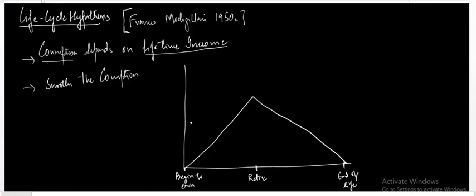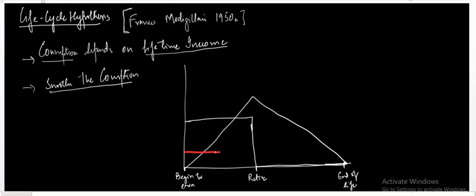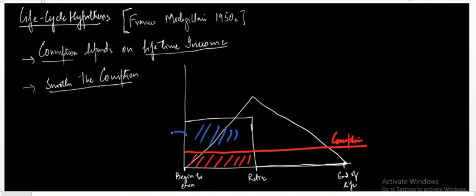Up to the point of retirement he is going to consume some part and save some part. He wants to consume the same amount — a smoothed level — over the period of his life. So this part of the diagram represents consumption, because he is maintaining smoothed consumption throughout life. The remaining portion above consumption but below income represents savings during the working years.